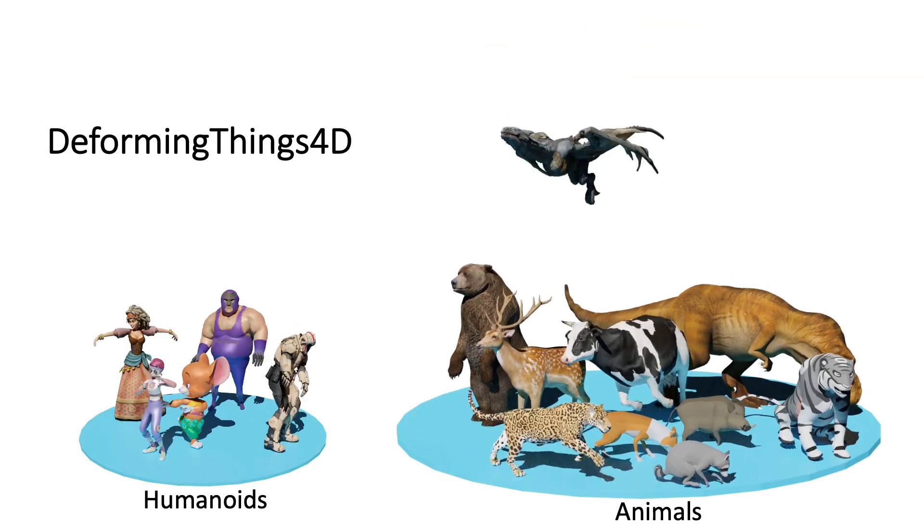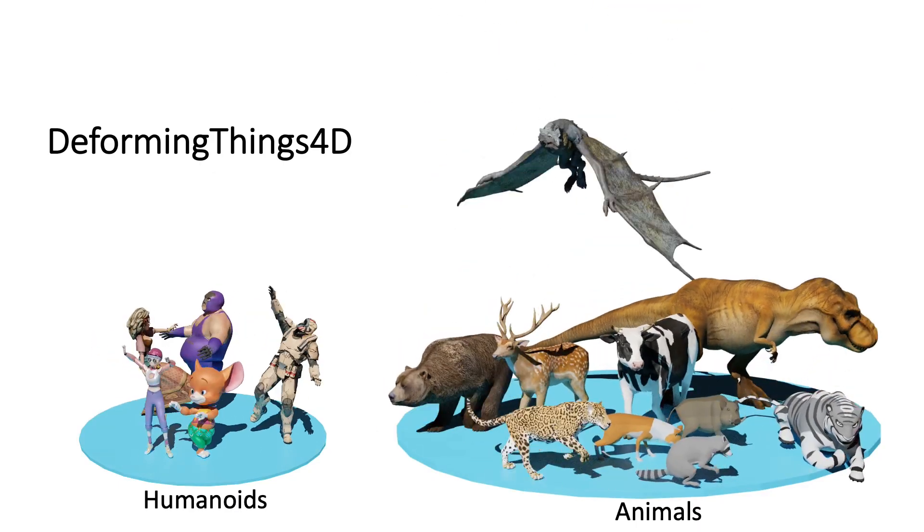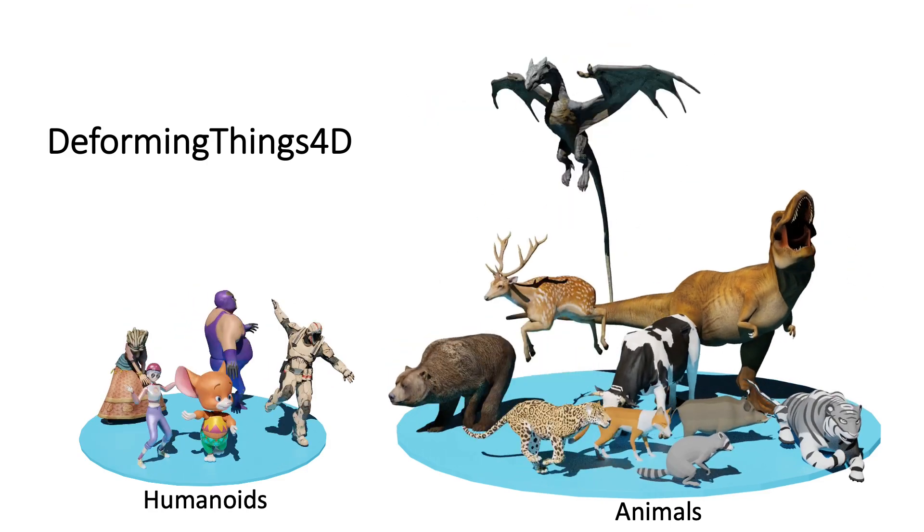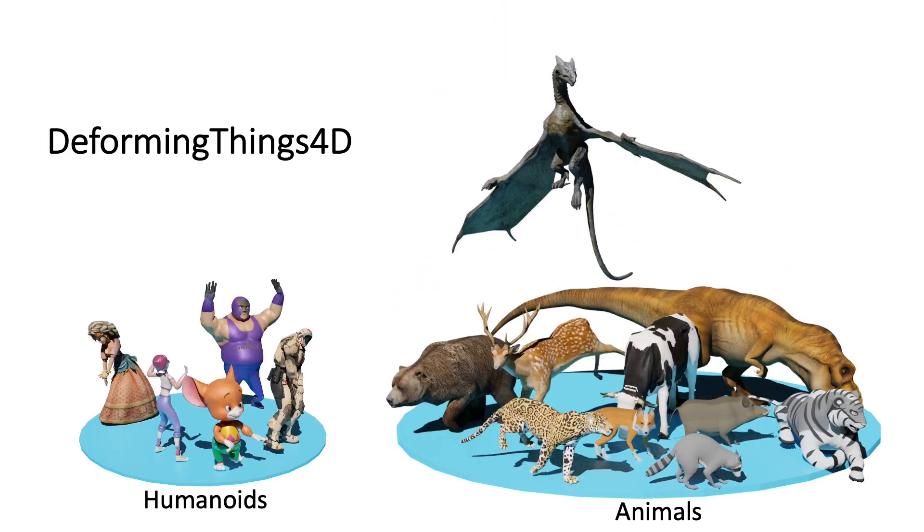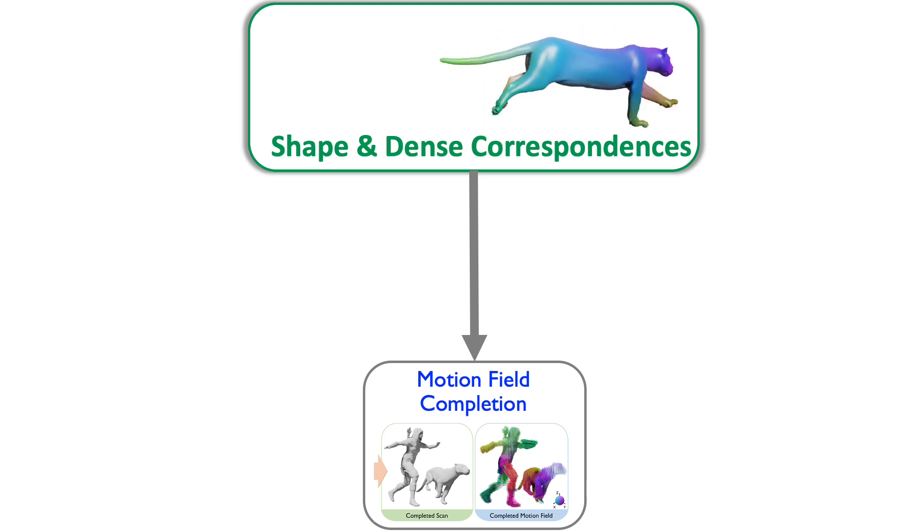To train our network, we propose a large-scale synthetic dataset called Deforming Things 4D. Here we show some examples. This dataset provides complete shapes and dense correspondences for training our 4D complete networks.